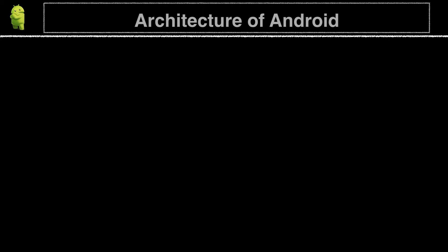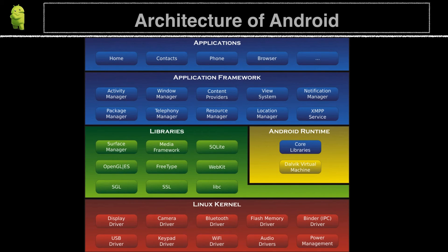Android is roughly divided into five sections in four main layers. The Linux kernel contains all the low-level device drivers for the hardware components. The libraries layer contains code for the main features of the Android operating system — this would include, for example, the SQLite libraries. The Android runtime is located in the same layer as the libraries and provides a set of core libraries to enable developers to write Android apps using Java. The application framework exposes different capabilities of the Android operating system to application developers to make use of in their own apps. The top applications layer includes all installed apps on the phone from the app store or from third parties, including the applications that we will write.